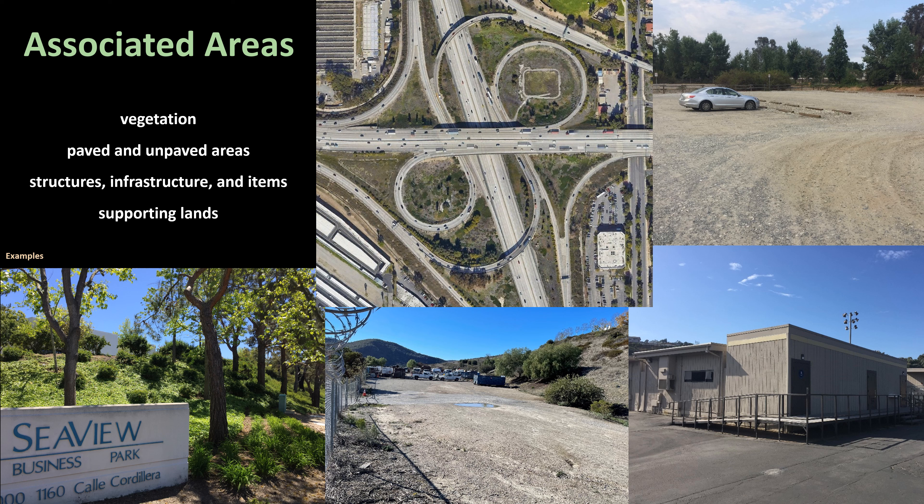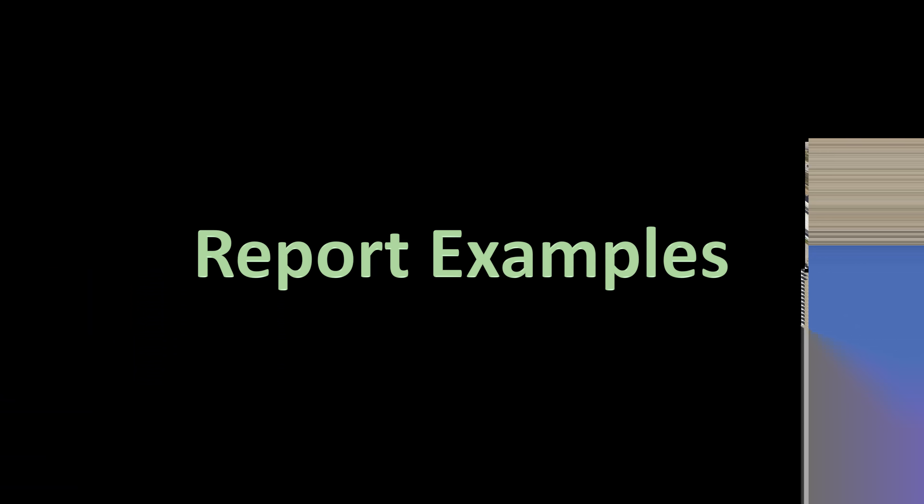Included with developed lands are its associated vegetation, paved and unpaved areas, structures, infrastructures and items, and supporting lands. An example of vegetation associated with developed lands includes landscaping, ornamental vegetation, lawns, gardens, and turf. For example, a strip of ornamental trees within a residential neighborhood would be included within the developed lands category, not the undeveloped lands category. Vegetation located within development is predominantly non-native, but it can contain native plant species. This vegetation could also support wildlife species.